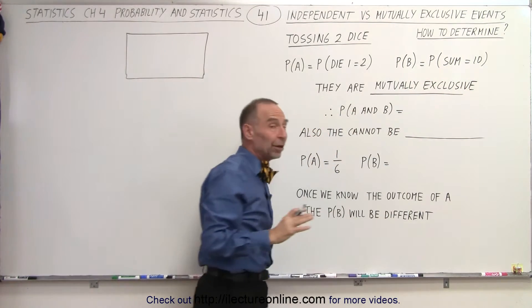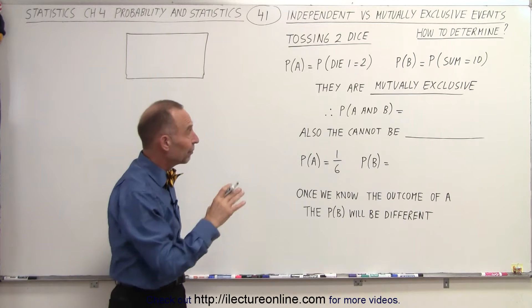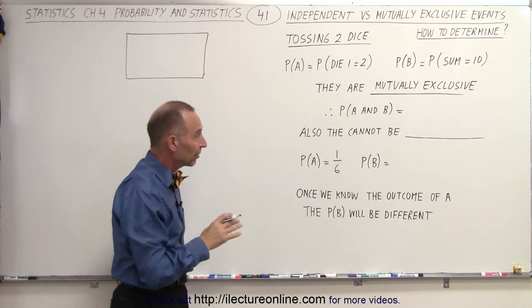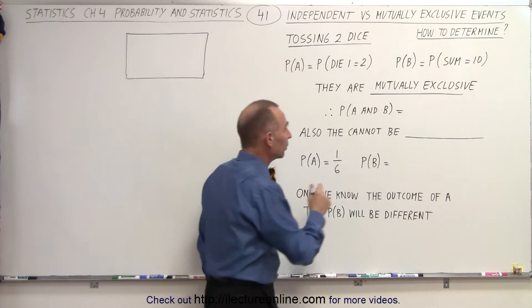And of course, if they're mutually exclusive, then we know that the probability of A and B occurring at the same time must be equal to 0.